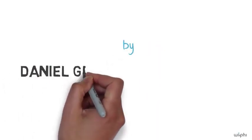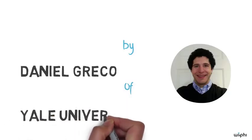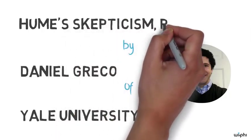My name is Daniel Greco, and I'm an assistant professor of philosophy at Yale University. Today's video will concern a topic in epistemology, which is the branch of philosophy that deals with the study of knowledge.